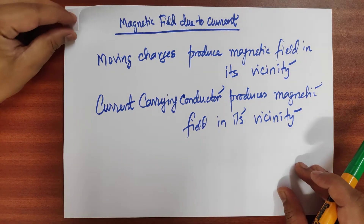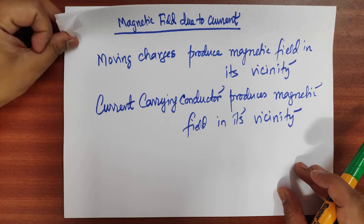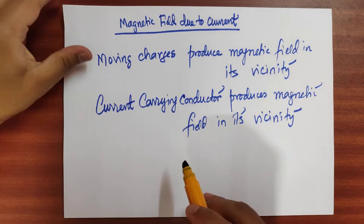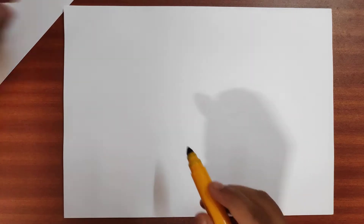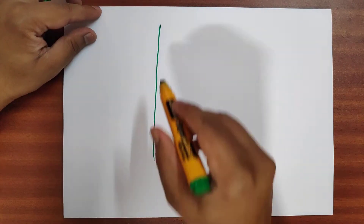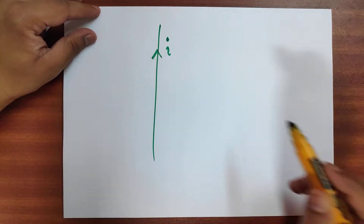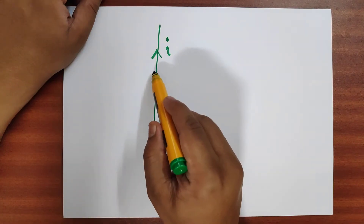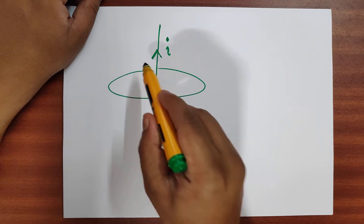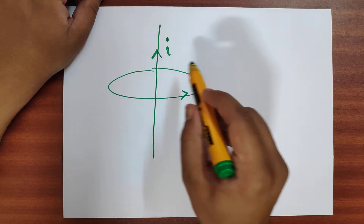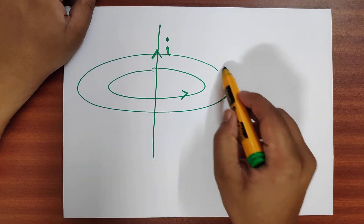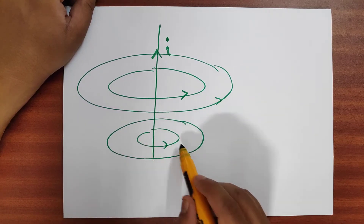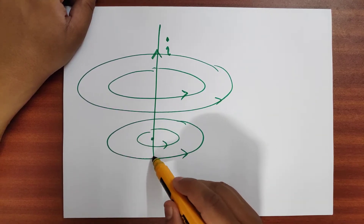We will now see what is the direction of the magnetic field due to a particular current carrying wire. If this is the direction of current, then the magnetic field produced forms circular magnetic field lines like this.